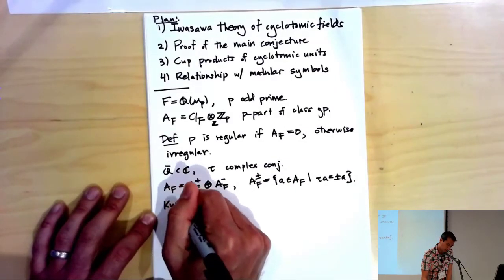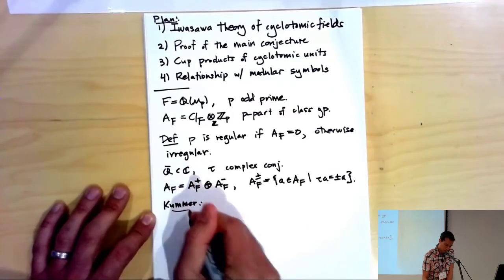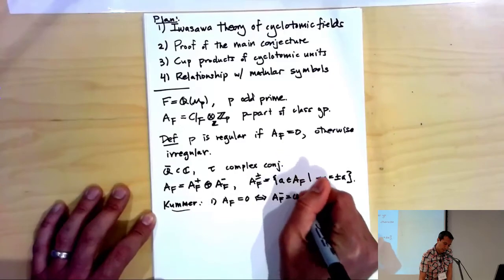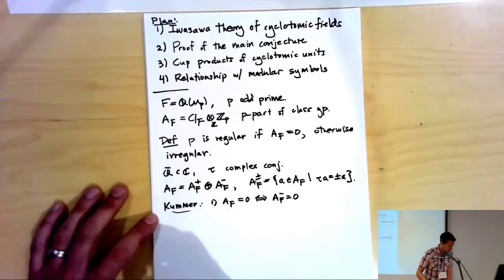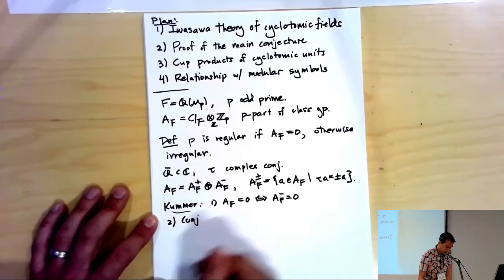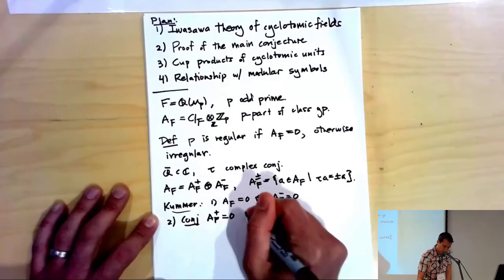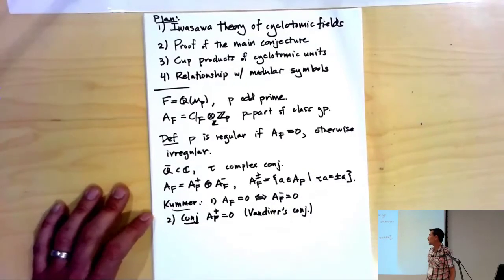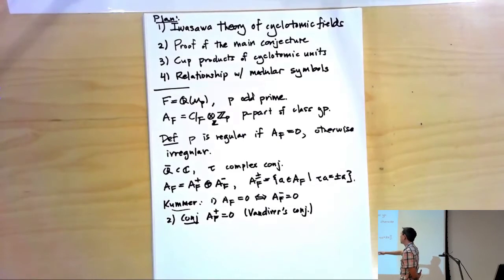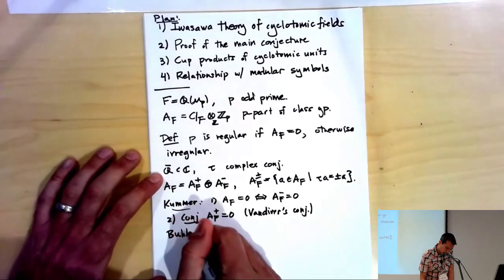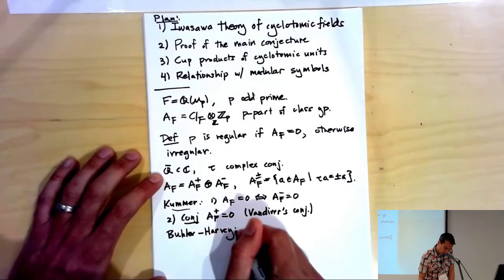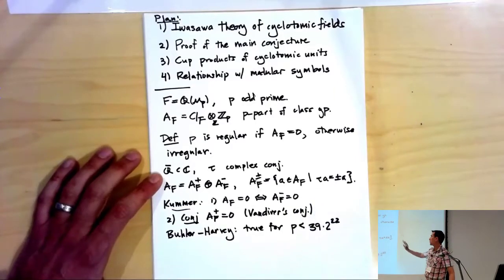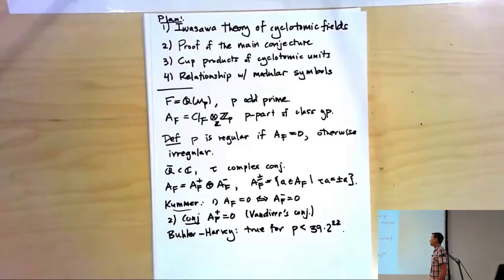Results dating back to Kummer in the mid-1800s: first, A_F is zero if and only if A_F⁻ is zero. Second — actually a conjecture — is that A_F⁺ is zero. This is called Vandiver's conjecture, rediscovered in the early 1900s. It's known for a large number of primes; Buehler and Harvey in 2009 showed it's true for P less than 39 times 2^22, which is about 163 million. But we still don't know it in general.